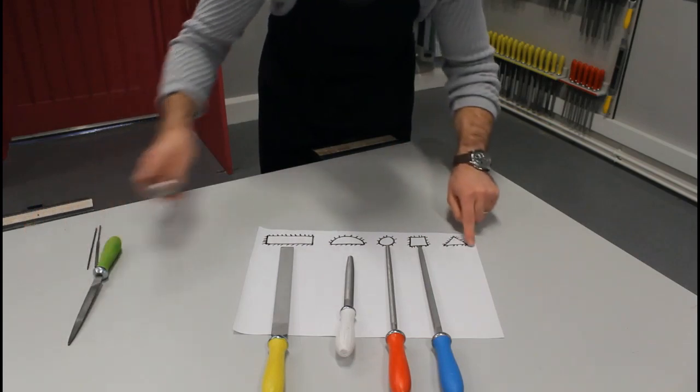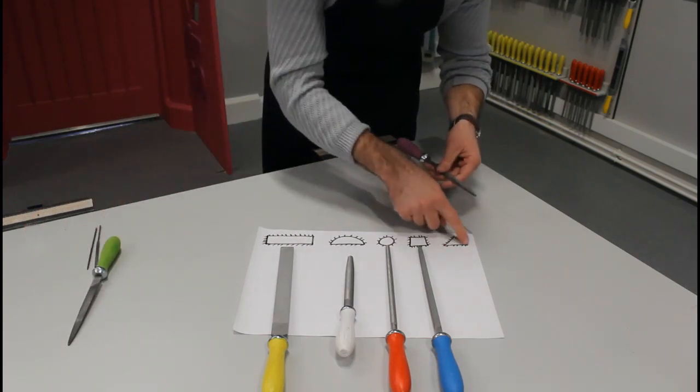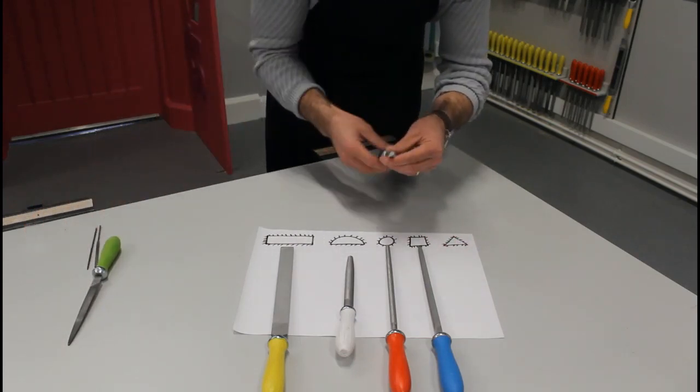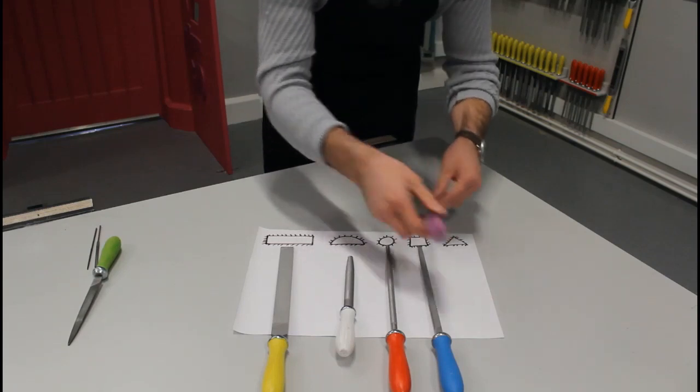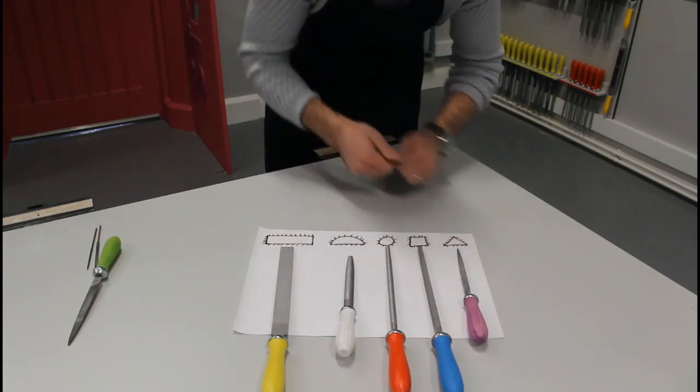And our last one is our triangular icon with cutting surface all the way around, similar to this one here. And that's our triangular file.